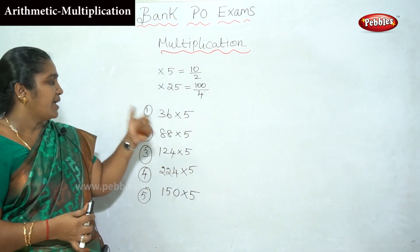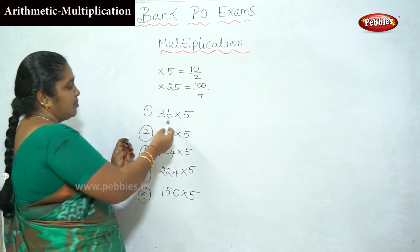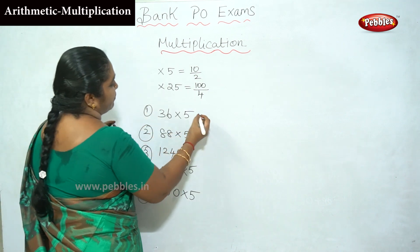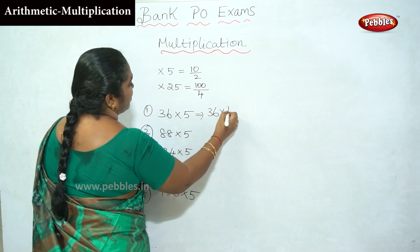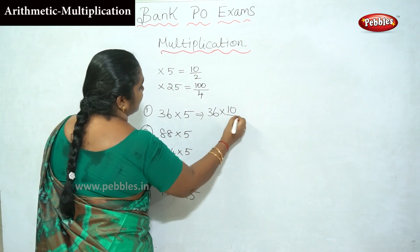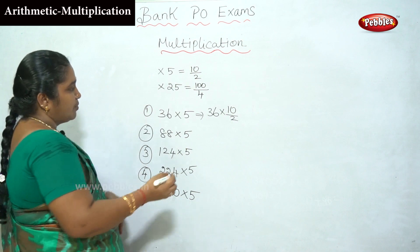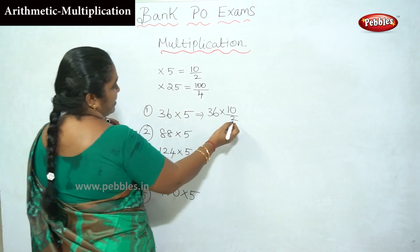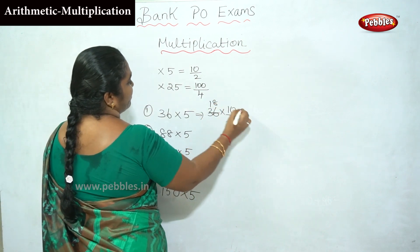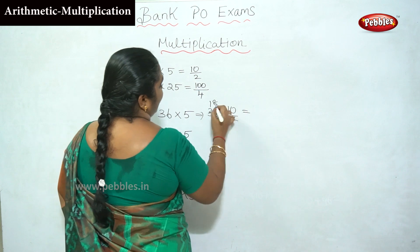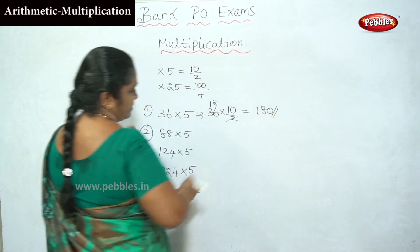Now, 36 into 5. Simple method. We use 10 by 2. So 36 into 10 divided by 2: 36 into 10 is 360, divide by 2 gives 180. The answer is 180.